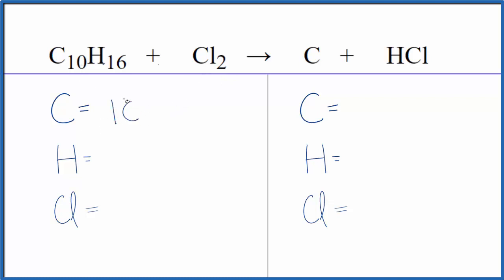We have 10 carbons, 16 hydrogens, and 2 chlorines.